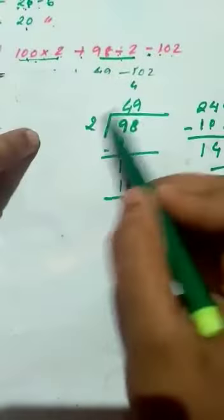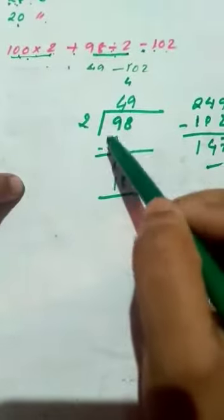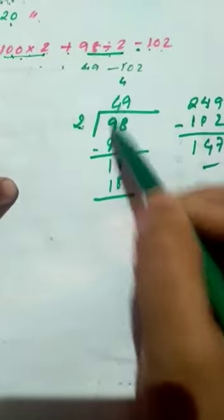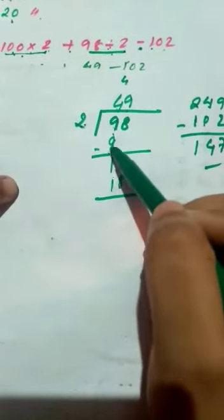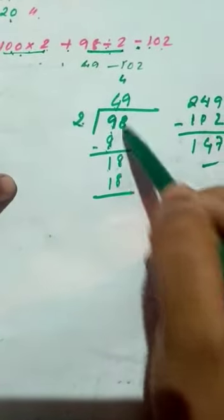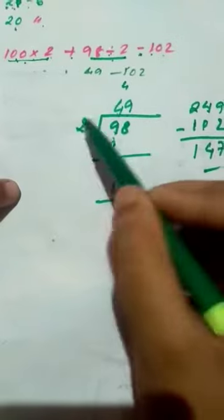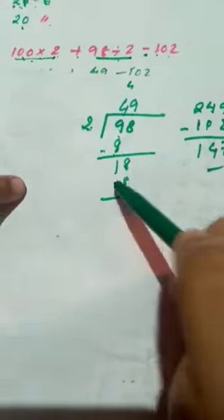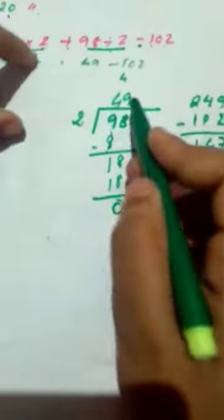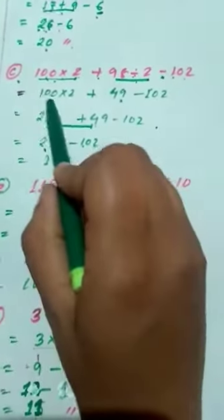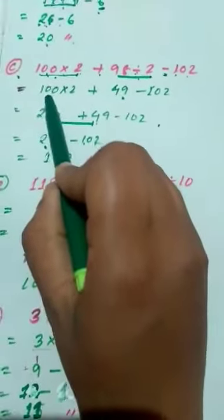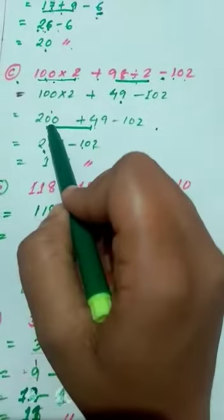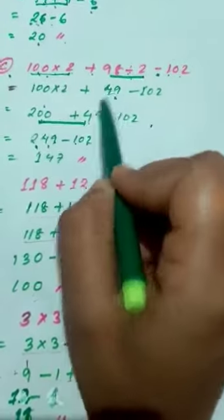98 divided by 2: 2 goes into 9 — 4 times giving 8, so 9 minus 8 is 1, bring down 8, making 18, and 2 goes into 18 nine times. So 98 divided by 2 equals 49. I have written 49 here directly. Now we have to multiply: 100 into 2 equals 200.